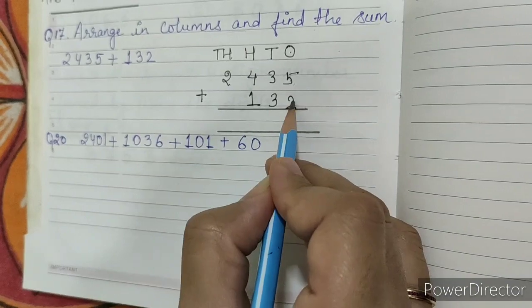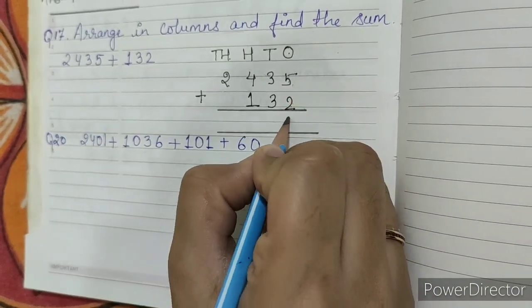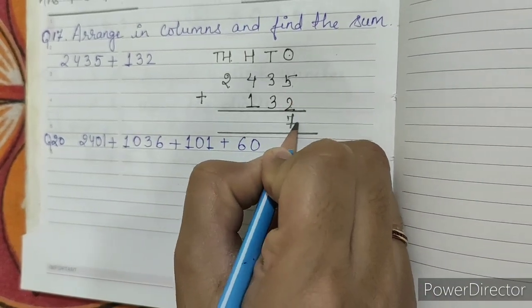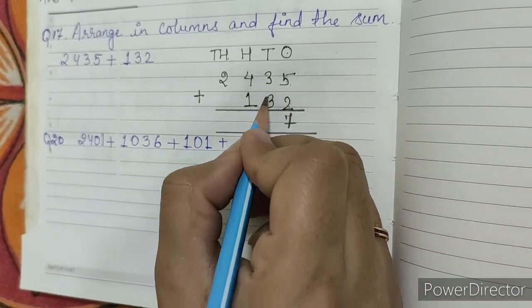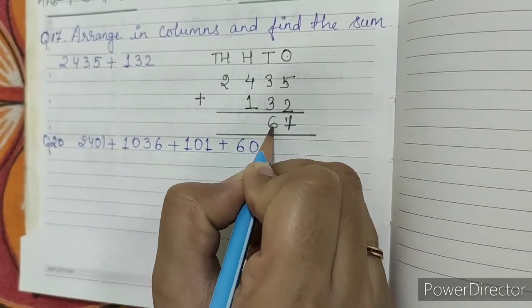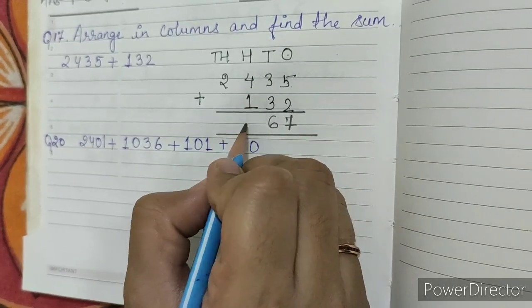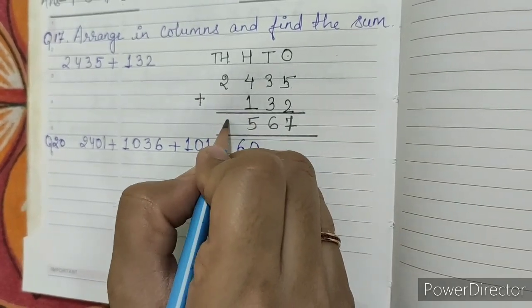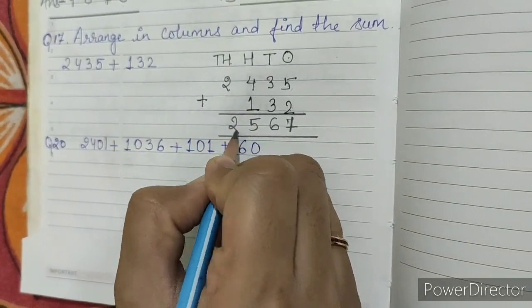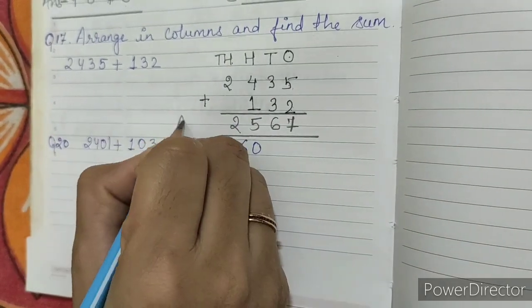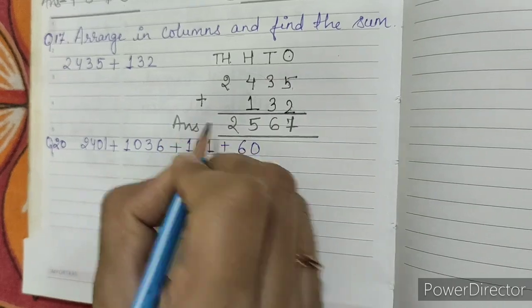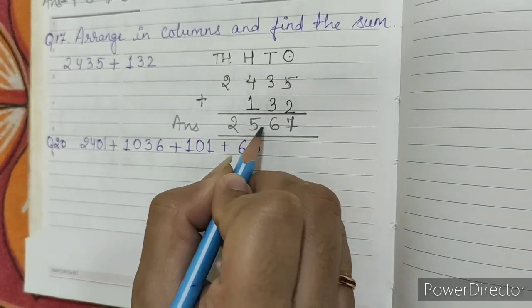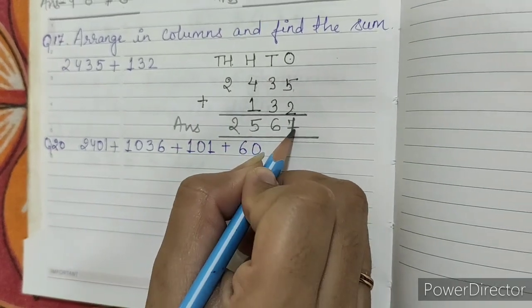Five plus two is seven, three plus three is six, four plus one is five, and two stays as two. So our answer is 2567.